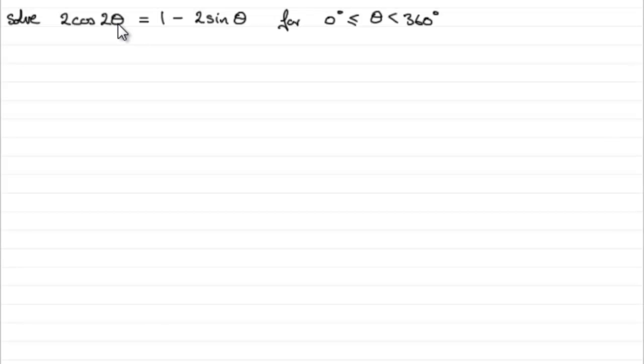And the other thing I notice is I've got different trig functions. I've got cosine here and sine here. And it's generally best to get them in the same trig function. So what I look at then is cos 2θ. And we should know an identity for cos 2θ. Do you remember that cos 2a is identical to cos²a - sin²a.